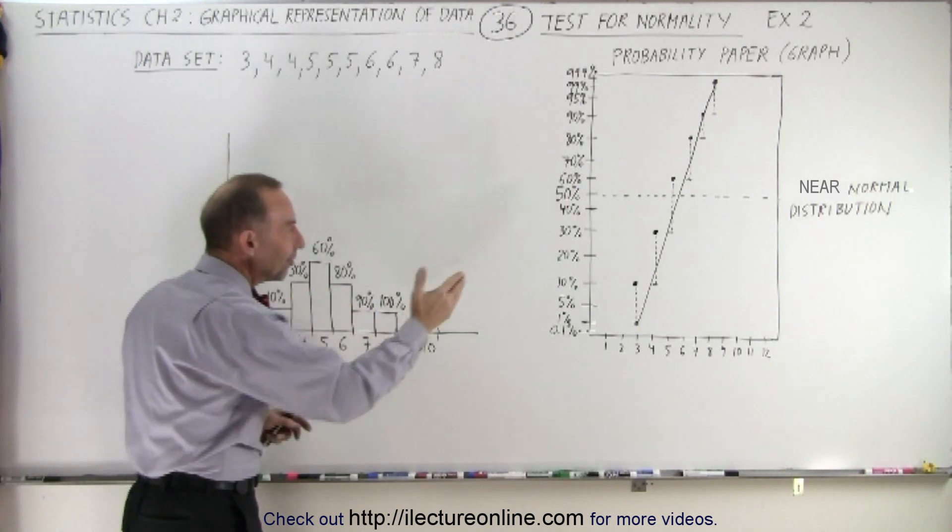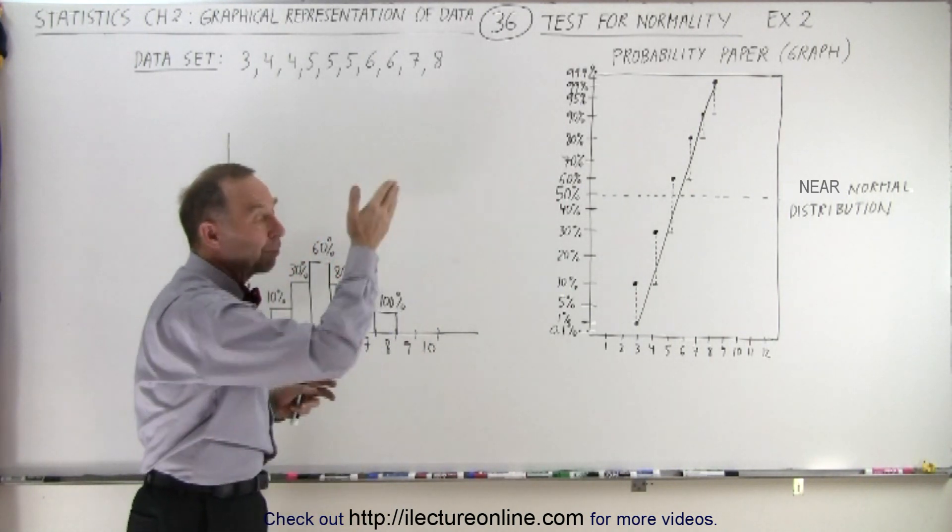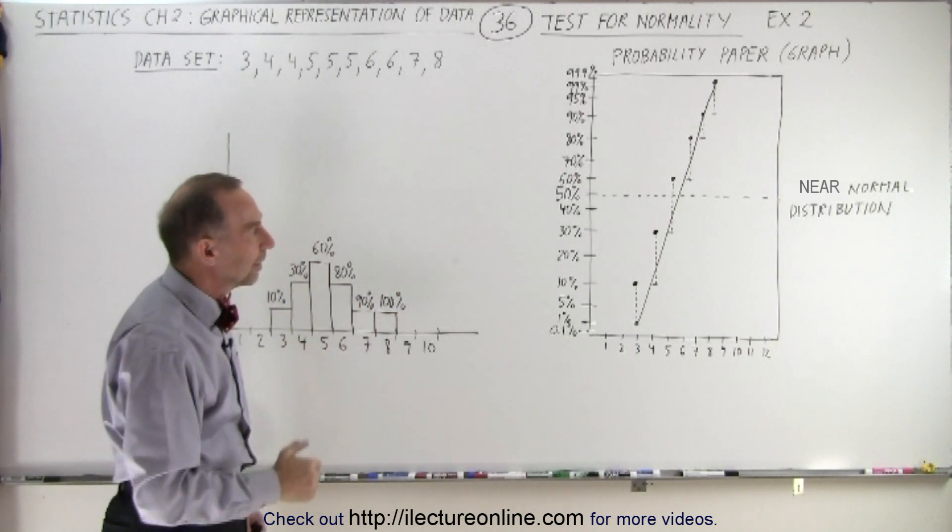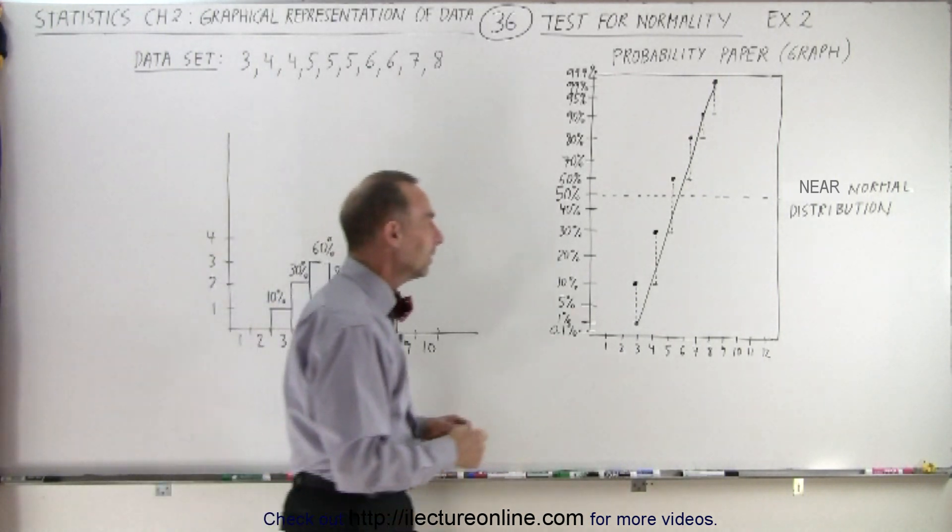Of course, with only 10 data points it's not that easy to show, but with many data points it's much easier to see if you're close to that diagonal line or not. The closer you are, the more your data follows a normal distribution.